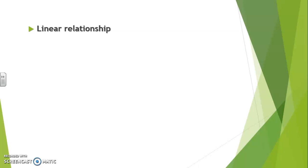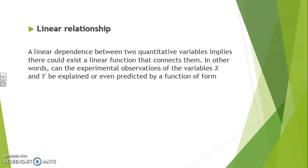Linear relationships are one of the many functional dependencies that exist. A linear dependence between two quantitative variables implies that there could exist a linear function that connects them. In other words, can the experimental observations of variables x and y be explained or even predicted by a function of the form y = ax + b?